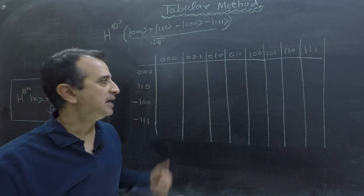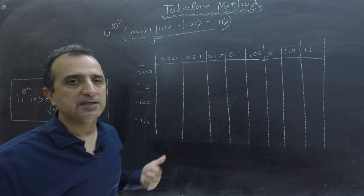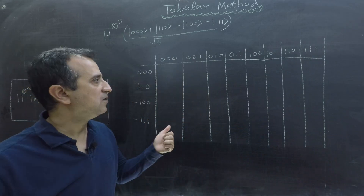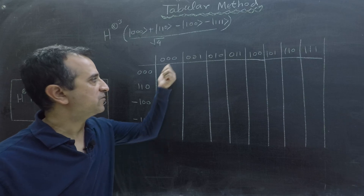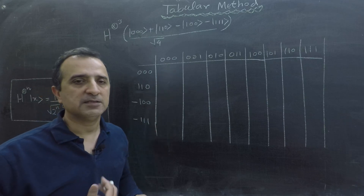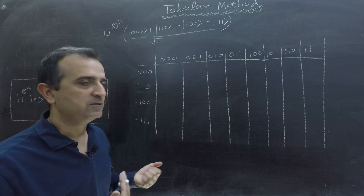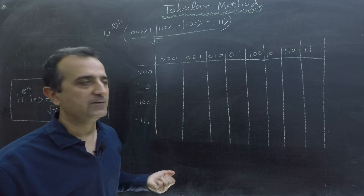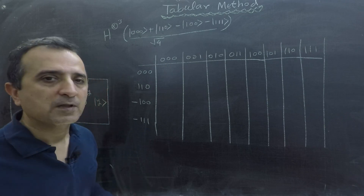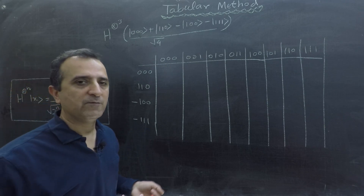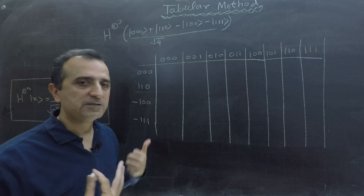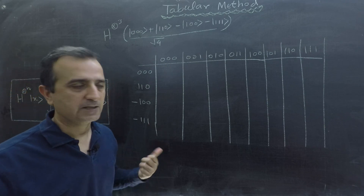The first row will correspond to 0 0 0, the second row to 1 1 0, the third row to minus 1 0 0. Now I have to put entries in this table, and each entry is a sign which could be either positive or negative. The question is how to determine if an entry is positive or negative.